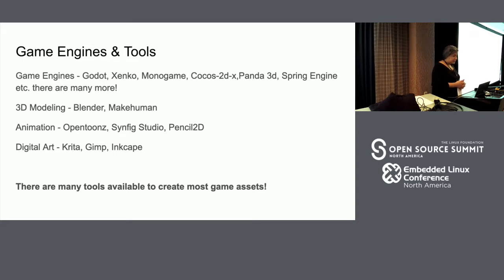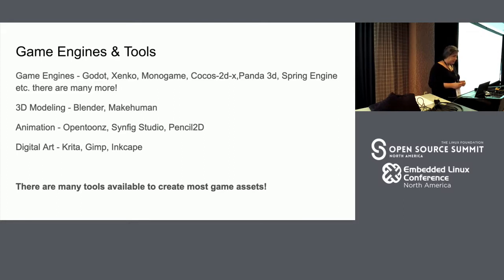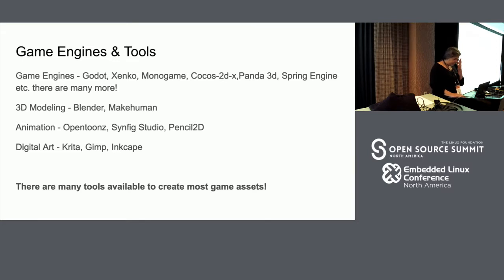There are 2D game engines like Cocos2DX or Panda. There are many out there. There are also 3D modeling programs like Blender and MakeHuman, animation tools like OpenToonz, which is a cell animation program, and programs like Synfig Studio, Pencil 2D, Krita, GIMP, and Inkscape for digital art. It's really up to your preference for what kind of assets you'd like to produce or where you are in your pipeline — pre-production, concept art, programming, engine programming, debugging, or post-production.